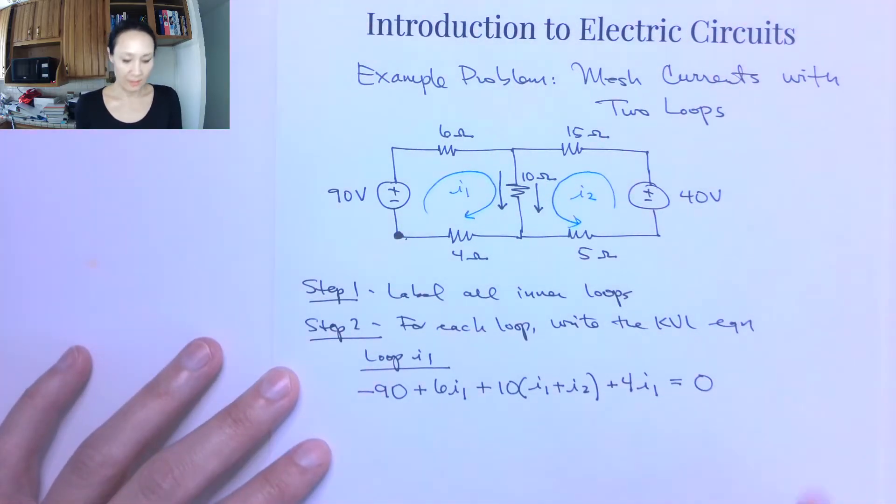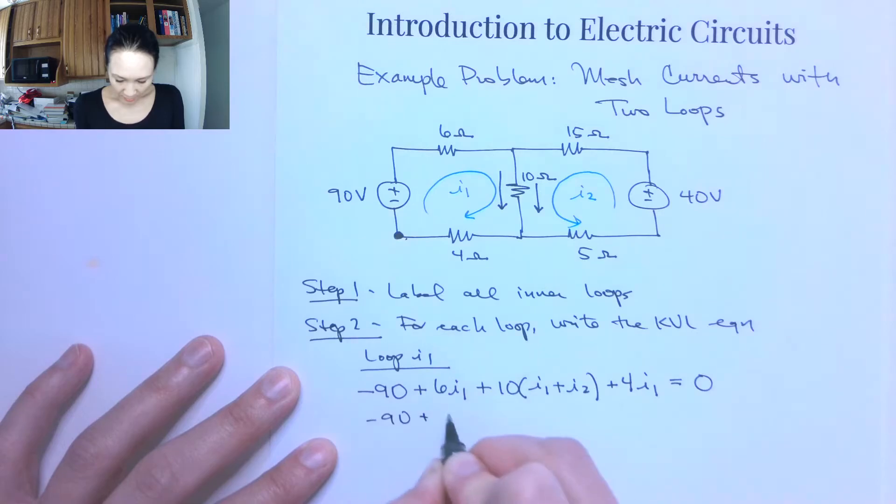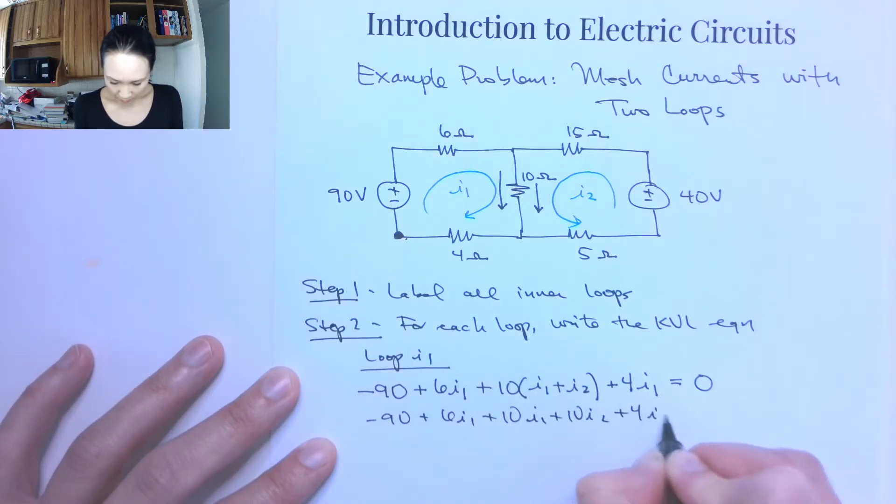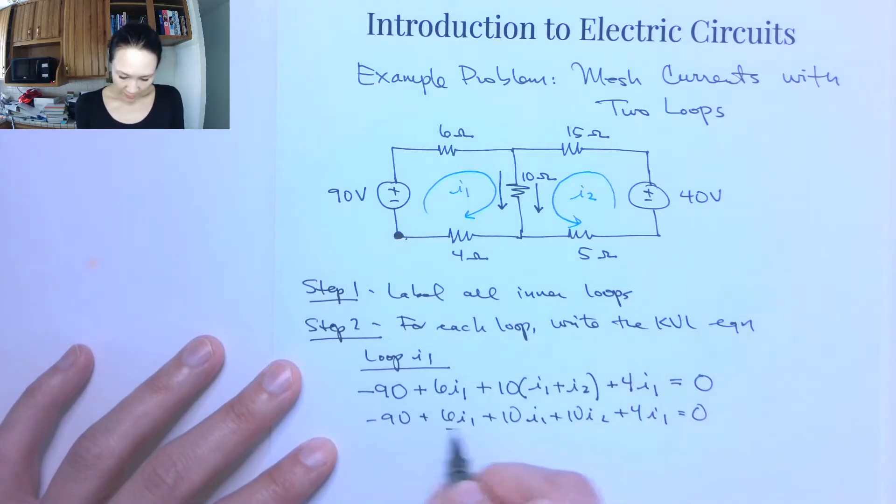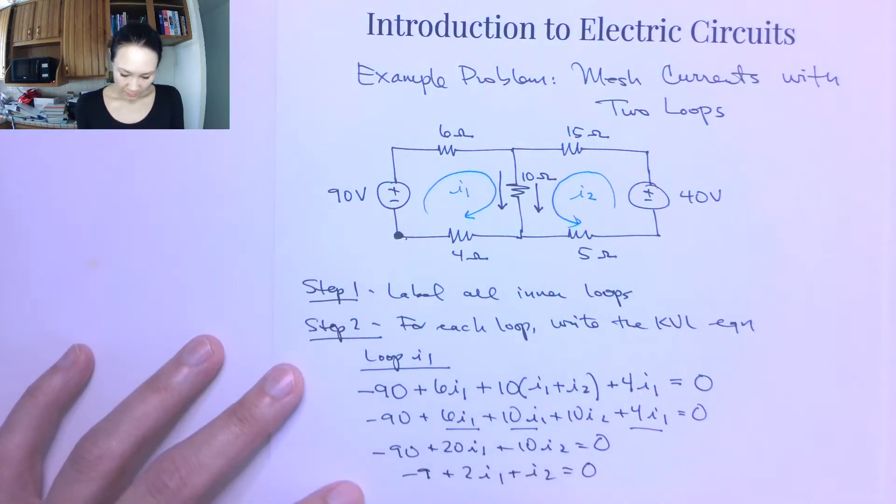So let me go ahead and simplify this equation. So this is negative 90 plus 6I1 plus 10I1 plus 10I2 plus 4I1 is equal to 0. And I've got an I1 term here, here, and here. So this gives me negative 90 plus 20I1 plus 10I2 is equal to 0. I'll reduce it, that gives me negative 9 plus 2I1 plus I2 is equal to 0. So this means that I2 is equal to 9 minus 2I1.